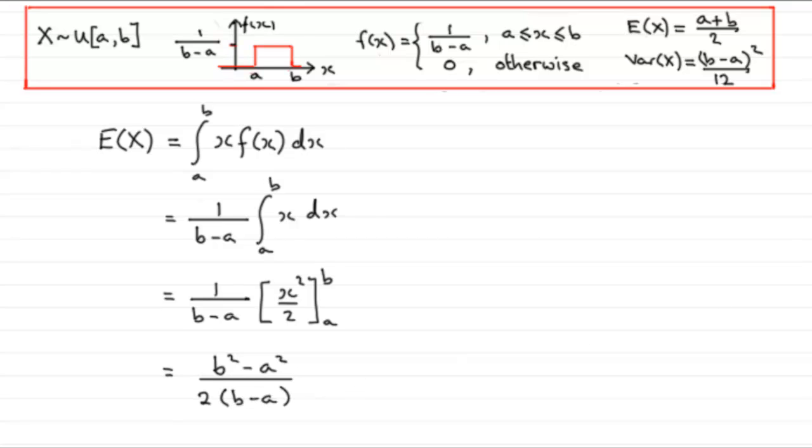Now b² - a² is the difference of two squares and so that factorizes. So E(X) is now (b-a) multiplied by (b+a), the difference of two squares. If you expand that out you'll get b² - a², and that's all over 2(b-a).